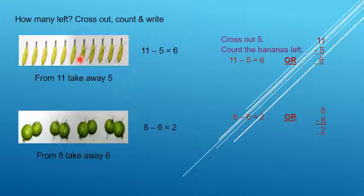How many bananas? 1, 2, 3, 4, 5 and 6. So, what is your answer? 6. 11 minus 5 is equal to 6.